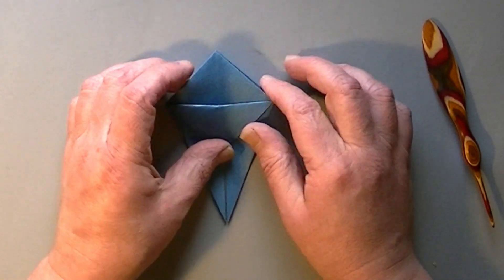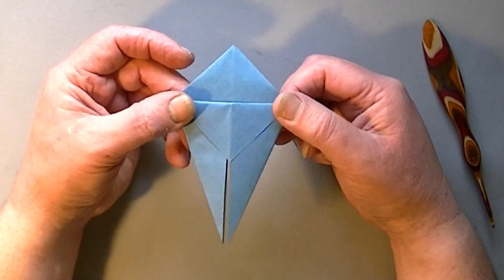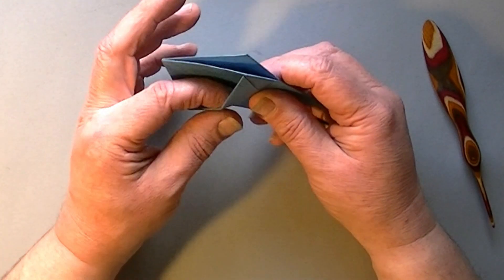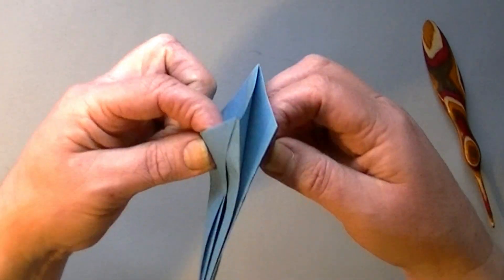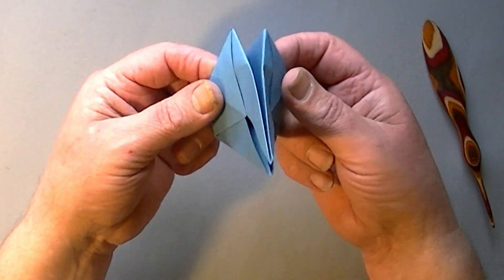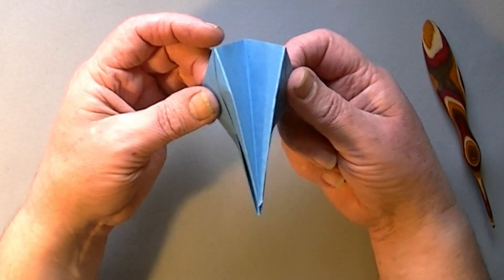Then we're going to take the top flap and fold it back down again. And we're going to do the same on the other side. The model is complete at this point, so it doesn't seem to be particularly impressive here, but what we do is put a finger in there and a finger in the same pocket on the other side, and we're going to open those out and kind of create a crease between the top points.